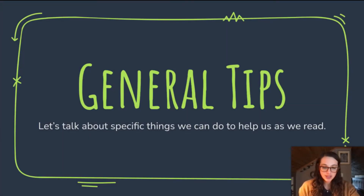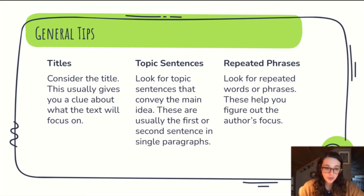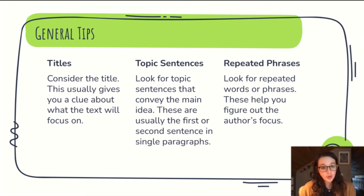Let's talk general tips — specific things we can do to help us as we read. We can look at titles, topic sentences, and repeated phrases. Consider the title; it usually gives you a clue about what the text will focus on. Topic sentences are the best place to look — they convey the main idea and are usually the first or second sentence in a paragraph. And if you're struggling, look for a word or phrase that repeats over and over again. This will help you figure out what the author's focus is.